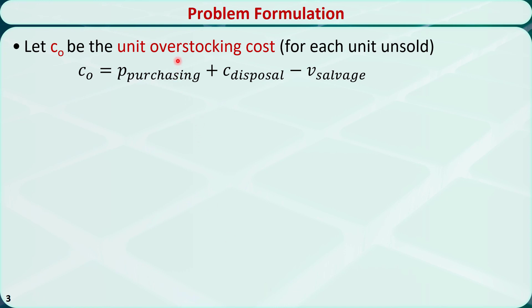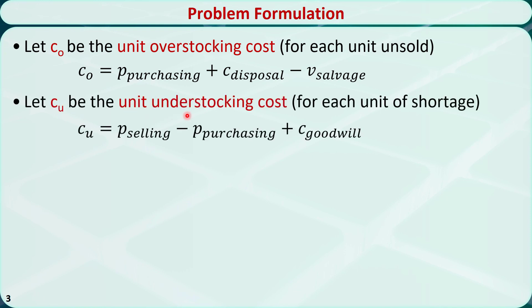Let CO be the unit overstocking cost for each unit unsold. CO is equal to the purchasing price plus the disposal cost minus the salvage value. The unit understocking cost CU is equal to the selling price minus the purchasing price, which is the profit we would have earned if the stock was available, plus the cost for the loss of goodwill.